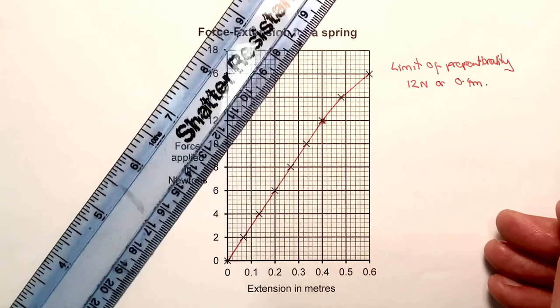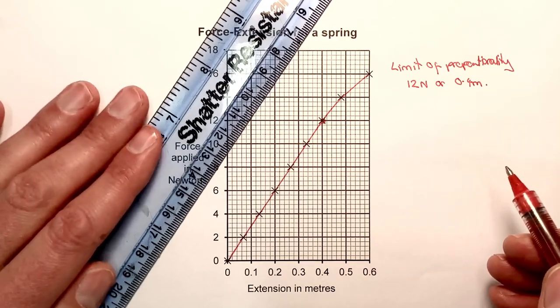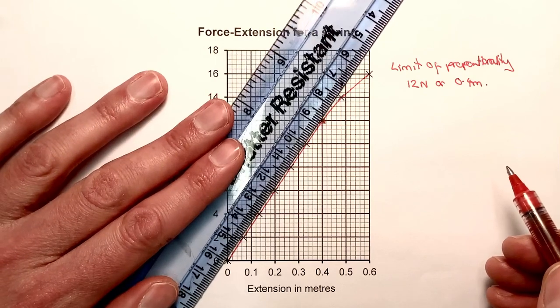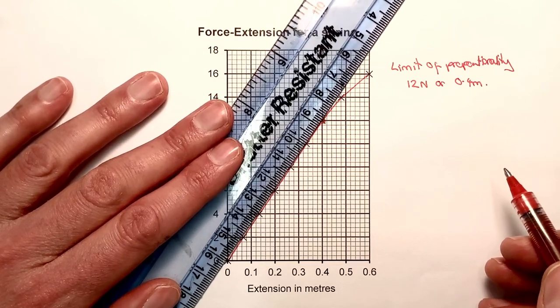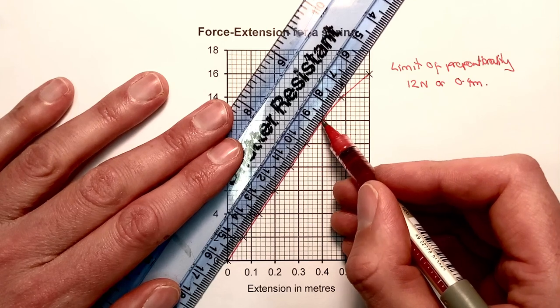it's really important—don't just look at it, because it's quite hard to say where it stops being a straight line without having a ruler alongside it. Then it's really clear that it stops being a straight line here, so it stops being directly proportional there.